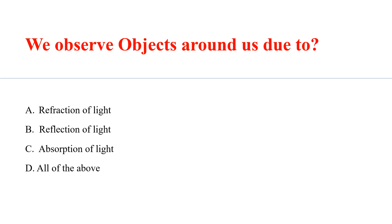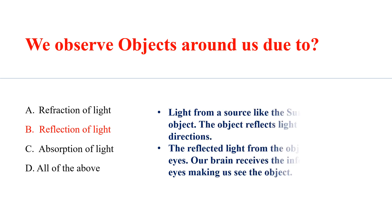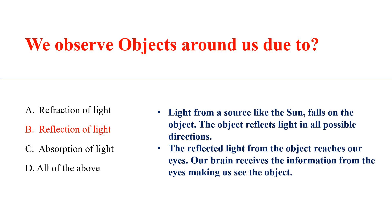We observe the objects around us due to the reflection of light. Light from a source like the sun falls on the object. The object reflects the light in all possible directions. The reflected light from the object reaches our eyes, and our brain receives the information from the eye, making us see the object.